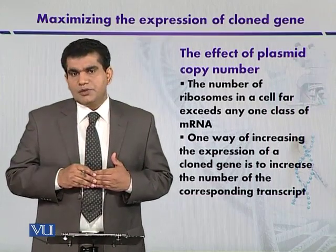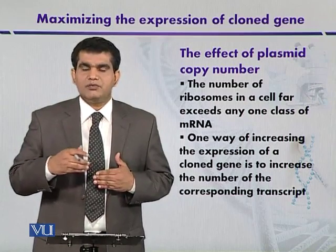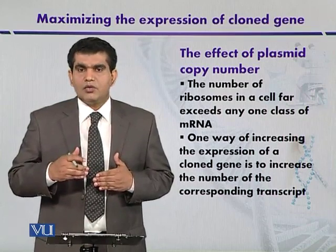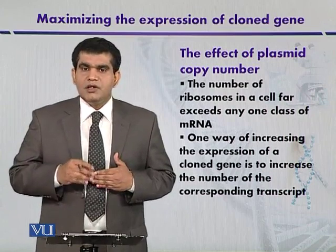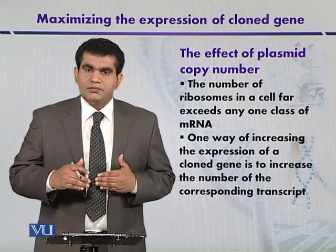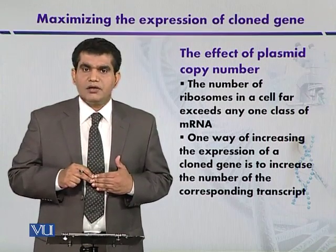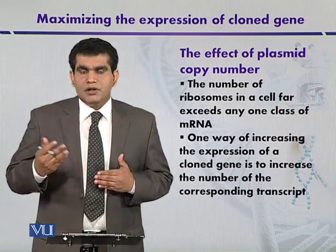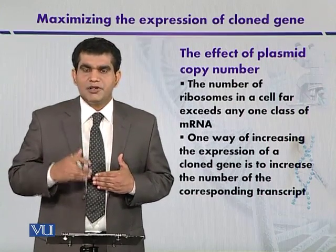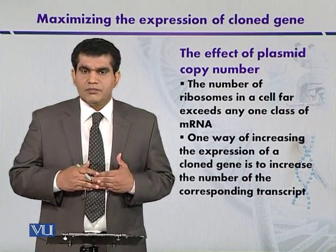If plasmids are deficient or mutant for RNA1, such as in the case of the PET153 plasmid, or are mutant for the ROP regulatory protein, the copy number of the plasmids can be increased. Similarly, by using bacterial host strains that are deficient for RNA1 or the ROP protein, the copy number of the plasmids can also be increased.